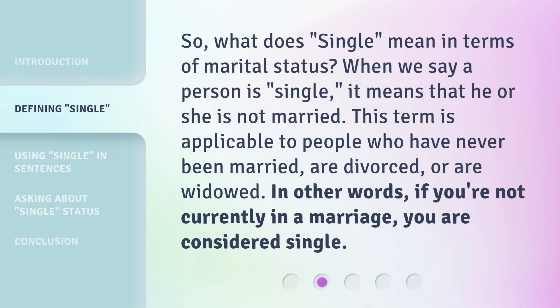So, what does Single mean in terms of marital status? When we say a person is Single, it means that he or she is not married. This term is applicable to people who have never been married, are divorced, or are widowed. In other words, if you're not currently in a marriage, you are considered Single.